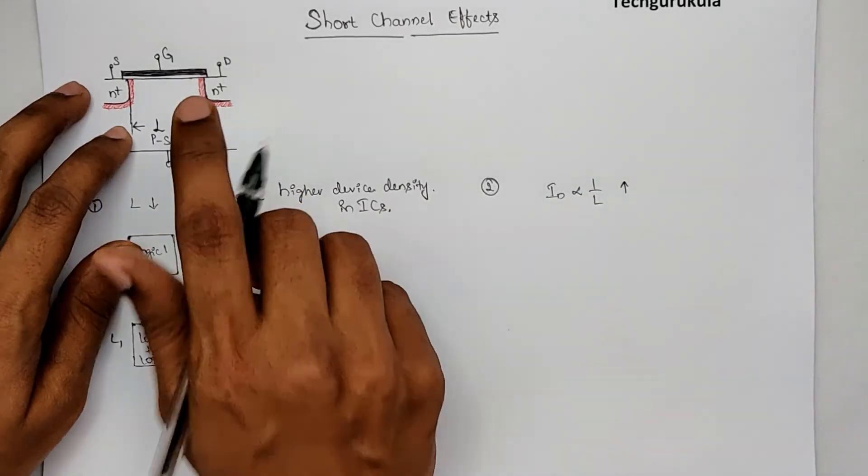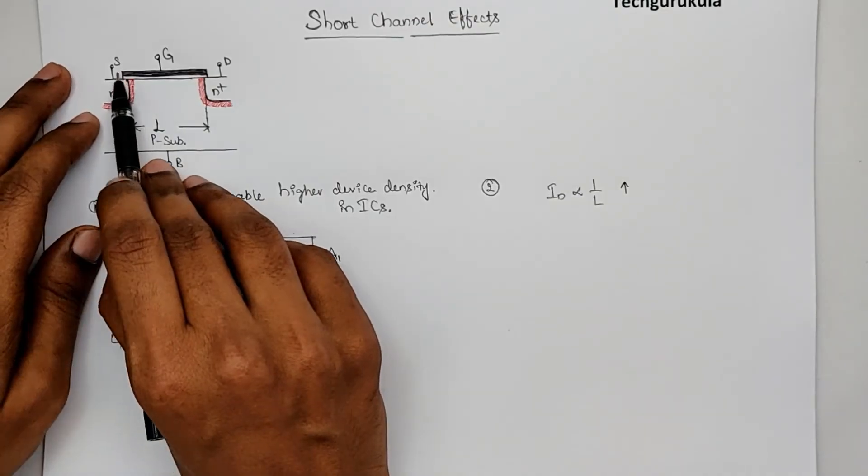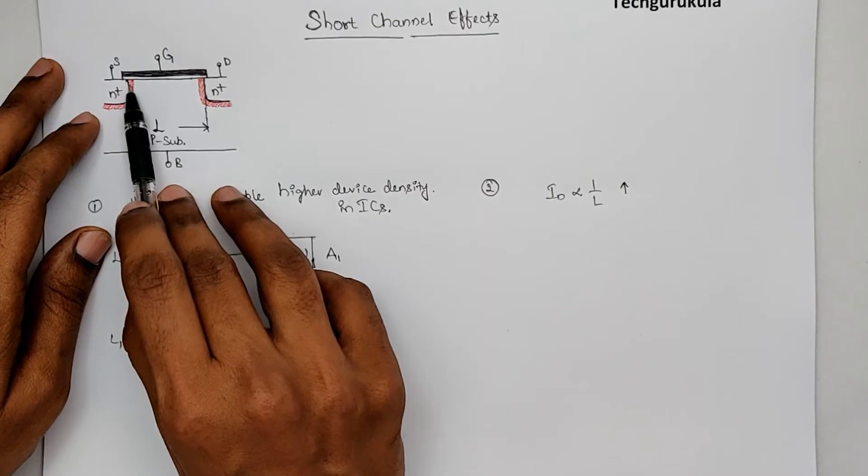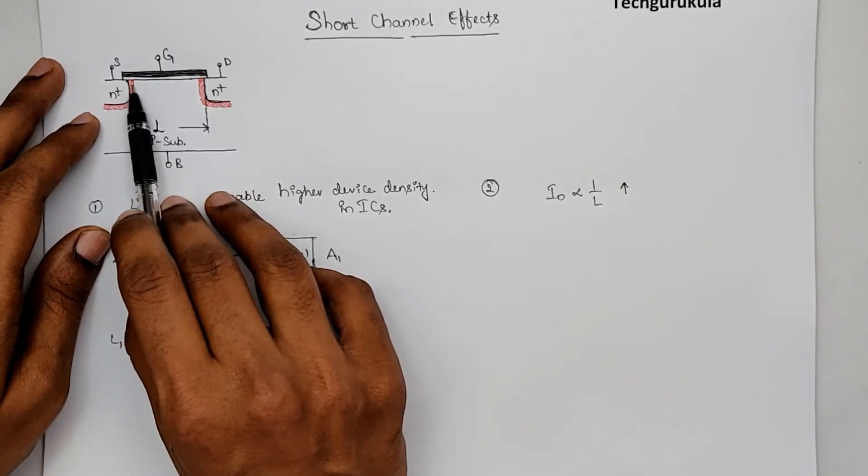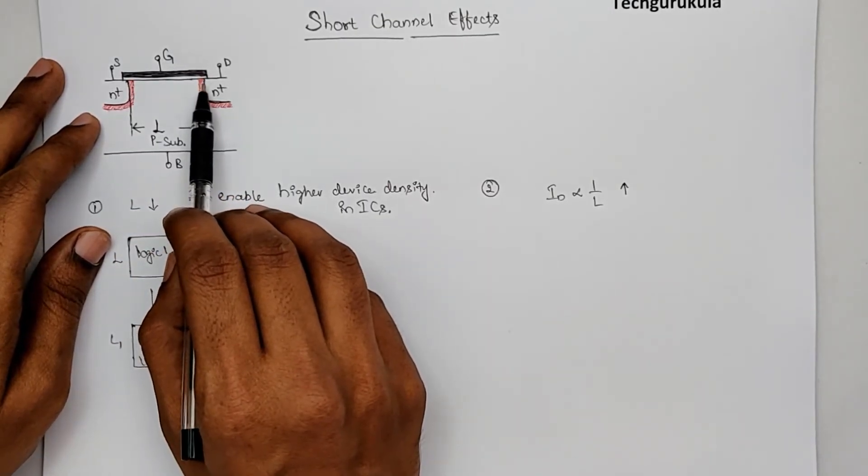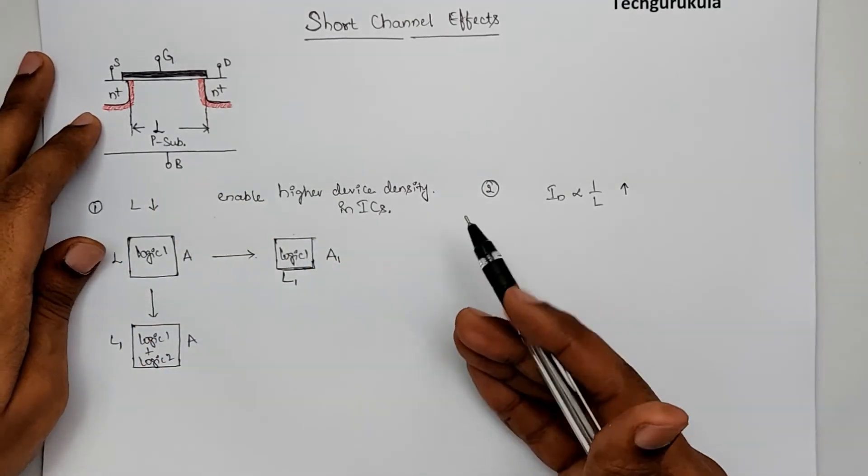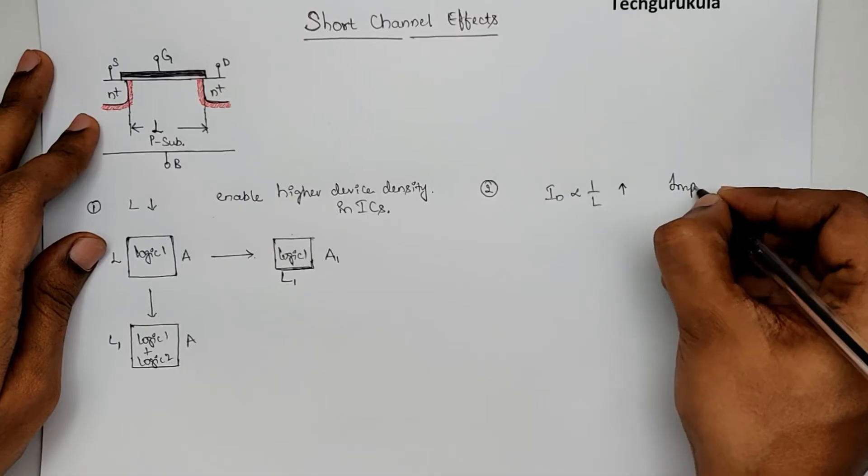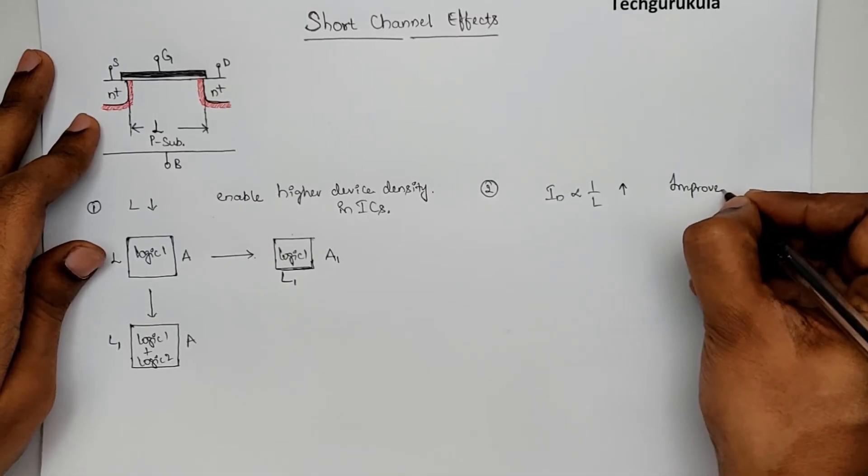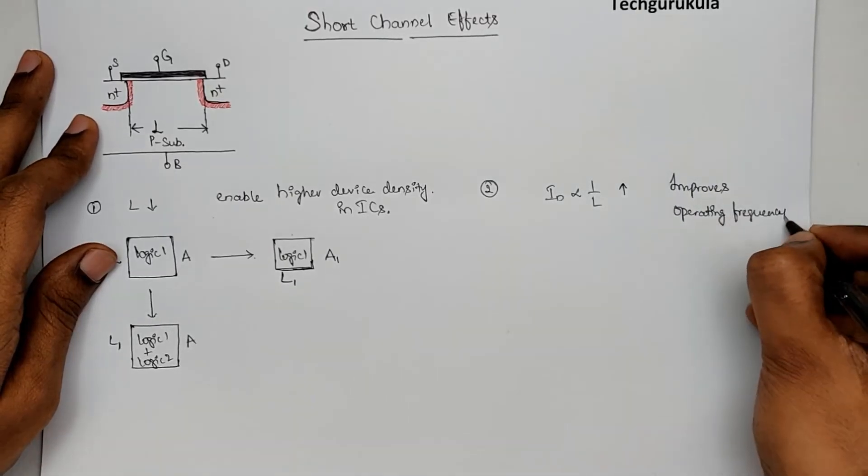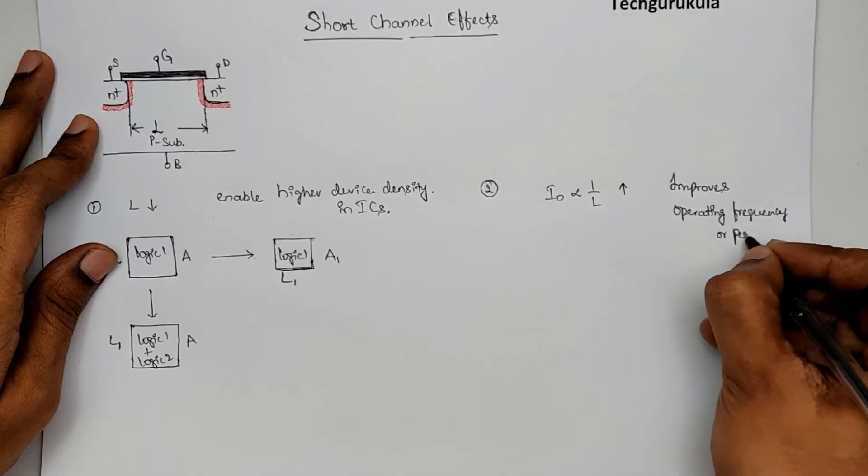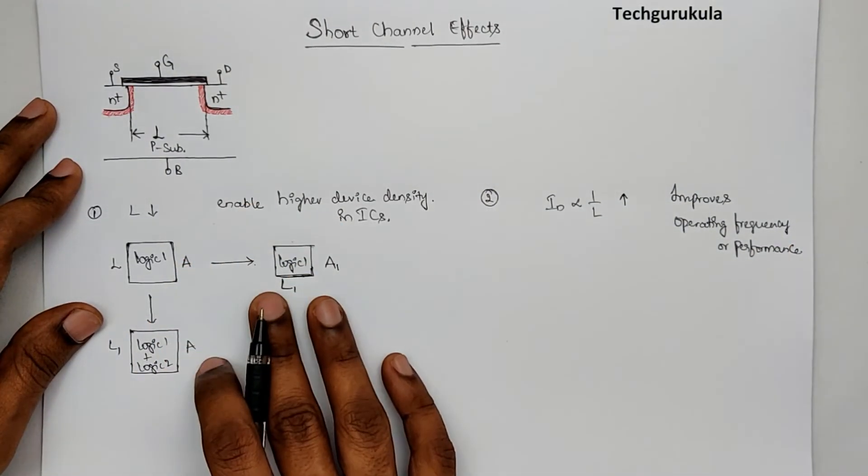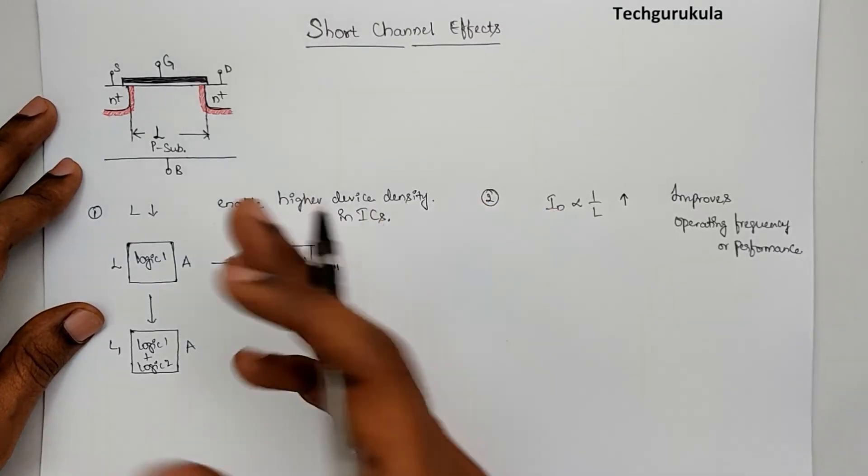And as the channel length reduces, the electron that has to travel from source to drain distance has reduced, which means electron can traverse that shorter distance in a smaller time, which means even the operating performance or the frequency of operation would increase. This improves operating frequency or performance. Considering the advantages that we get when we reduce the channel length, of course we would want to reduce the channel length.